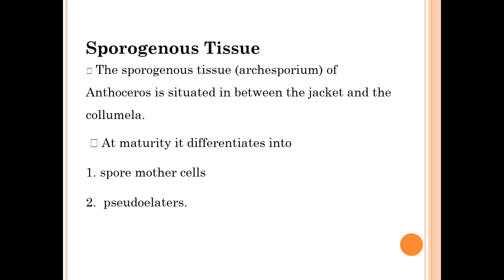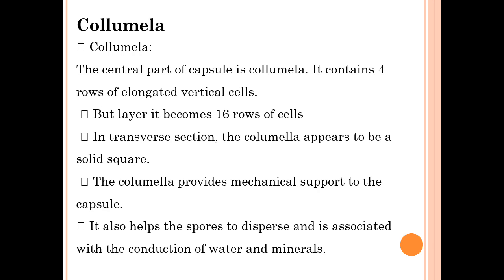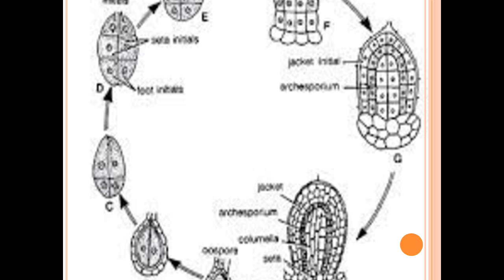The archesporium of Anthoceros is situated between the jacket and the columella cells. At maturity, it differentiates into spore mother cells and pseudo-elaters. The central part of the capsule is the columella. It contains four rows of elongated vertical cells, but later it becomes 16 rows of cells. In transverse section, the columella appears to be solid and square-shaped. The columella provides mechanical support to the capsule, helps the spores to disperse, and is associated with the conduction of water and minerals. You can see the division of cells in the diagram, showing how jacket initial cells divide.